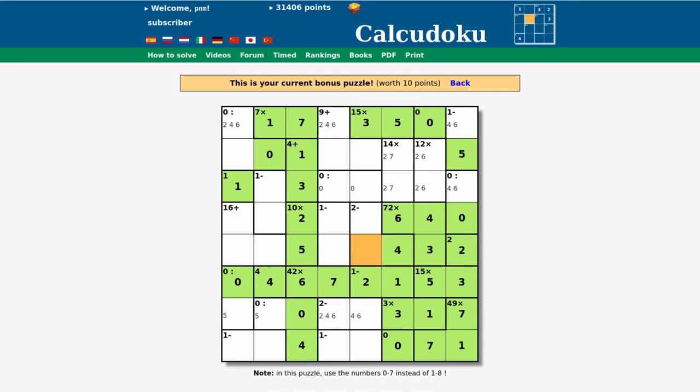This one will be 4 minus 0 minus 2, or 7 minus 4 minus 1. That's the one that works. 7 and a 1. Now looking maybe at this 9 plus cage in the top middle. Well, if this is a 6, this is either 6, 3, 0, for example, like this, or 6, 2, 1, which clearly isn't possible. So it can't be a 6. It has to be a 4 or a 2.